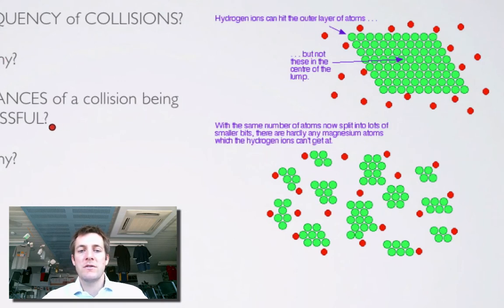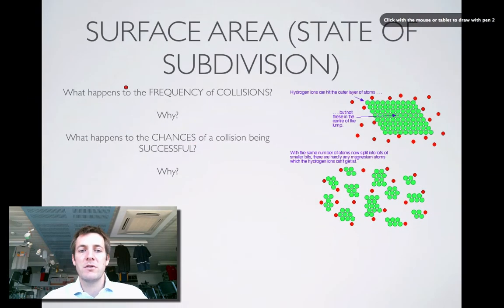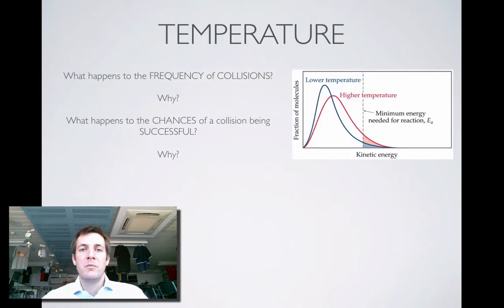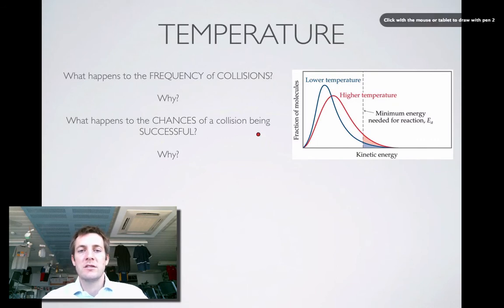What happens to the chances of a collision being successful? This comes down to the energy of collisions. Simply breaking something into smaller pieces doesn't change the energy of the particles. So the frequency of collisions increases because more particles are exposed, but the chances of collisions being successful — leading to a reaction — don't change, because the particles still have the same amount of energy.